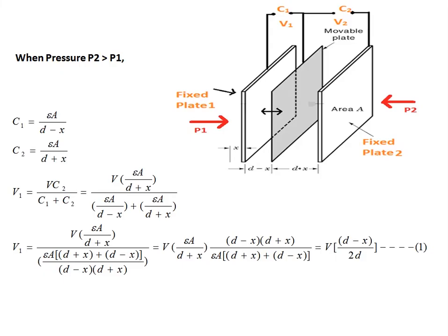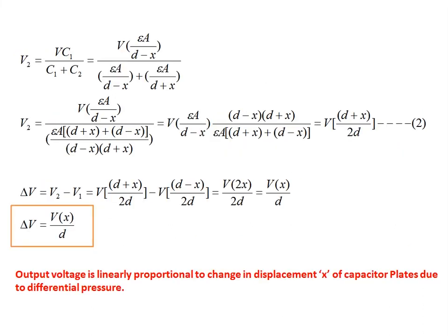Whenever pressure P2 is greater than P1, the movable plate moves towards fixed plate 1. The distance between fixed plate 1 and the movable plate becomes D minus X, and the distance between the movable plate and fixed plate 2 becomes D plus X. Deriving the capacitance and voltage equations gives delta V = V × X / D. The output voltage is therefore linearly proportional to the displacement X of the capacitor plates, caused by the differential pressure.